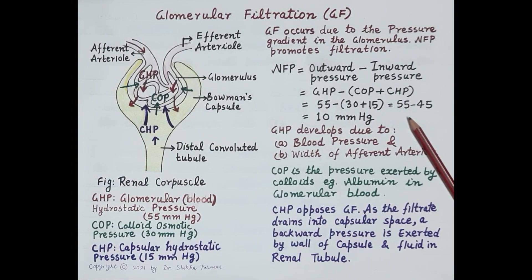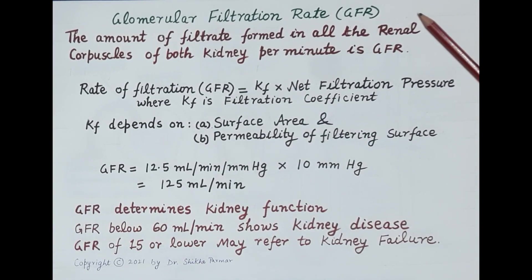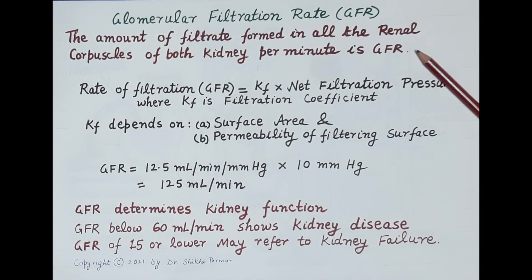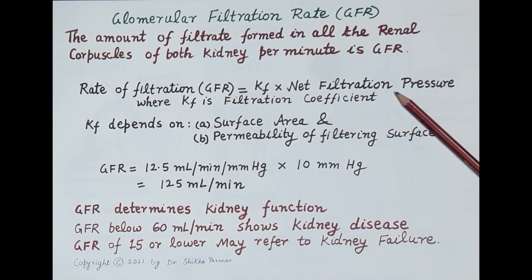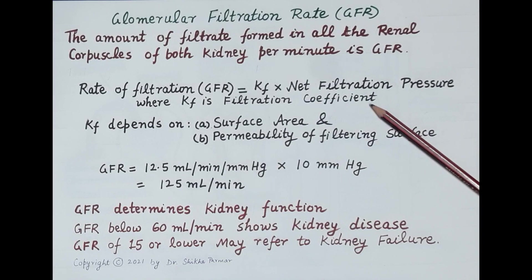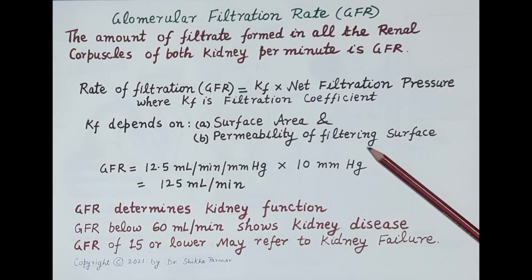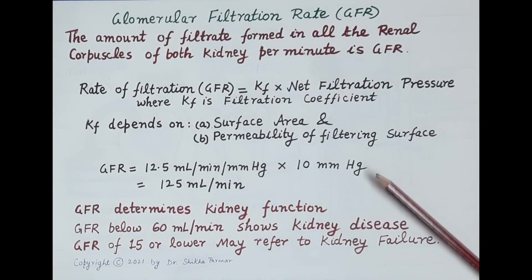In a healthy kidney, a net filtration pressure of 10 mmHg is sufficient for glomerular filtration. The amount of filtrate formed in all the renal corpuscles of both kidneys per minute is termed the glomerular filtration rate (GFR). Normally, kidneys produce 180 liters of filtrate per day. The GFR is the product of the filtration coefficient and the net filtration pressure. This filtration coefficient depends upon the surface area and permeability of the filtering surface — higher surface area and higher permeability both increase GFR.